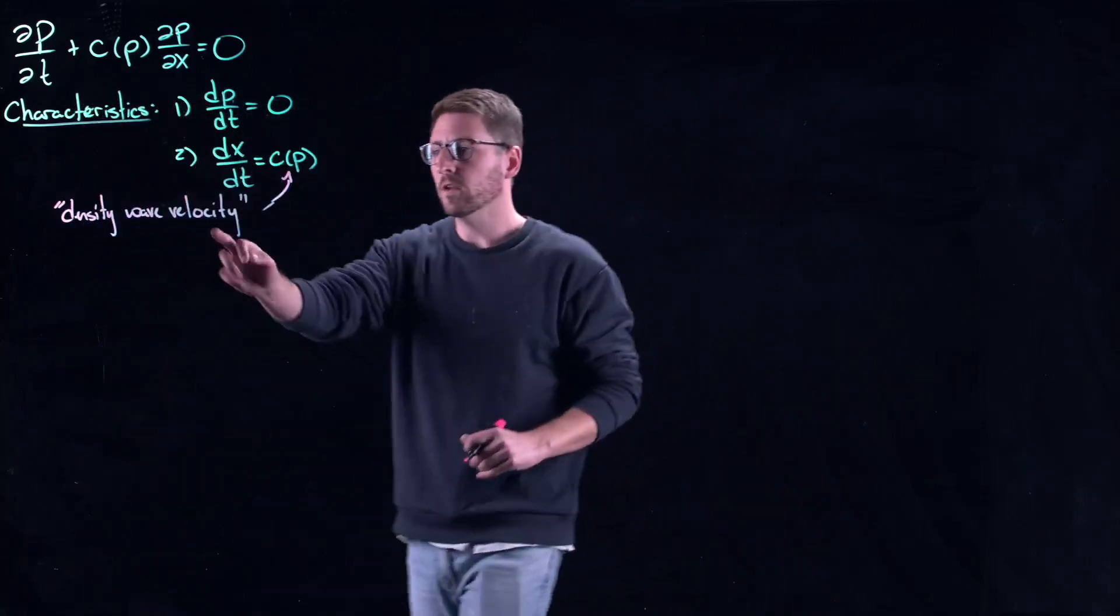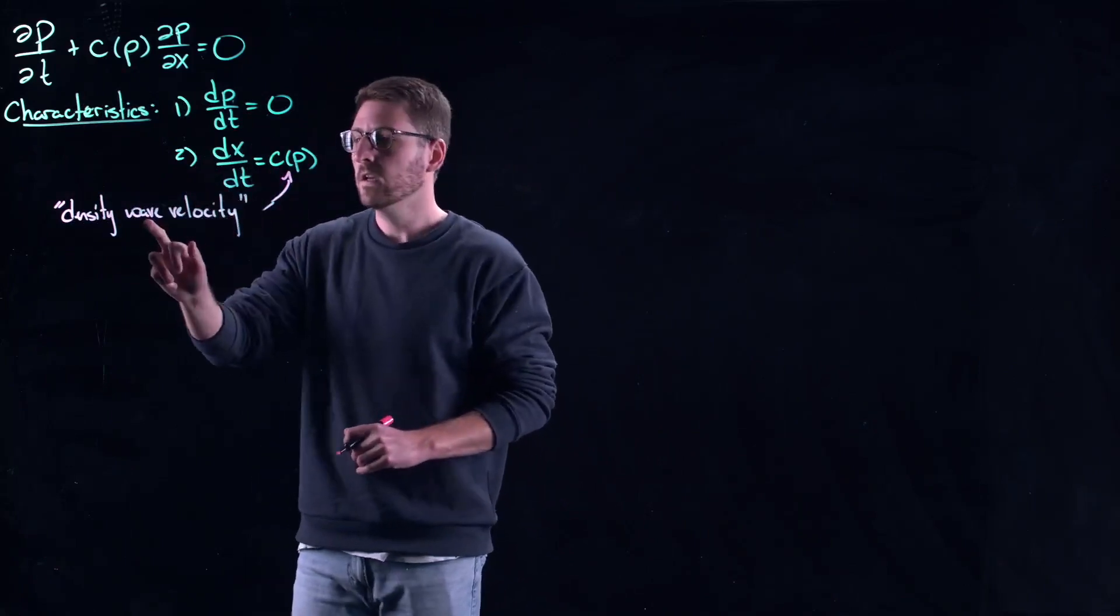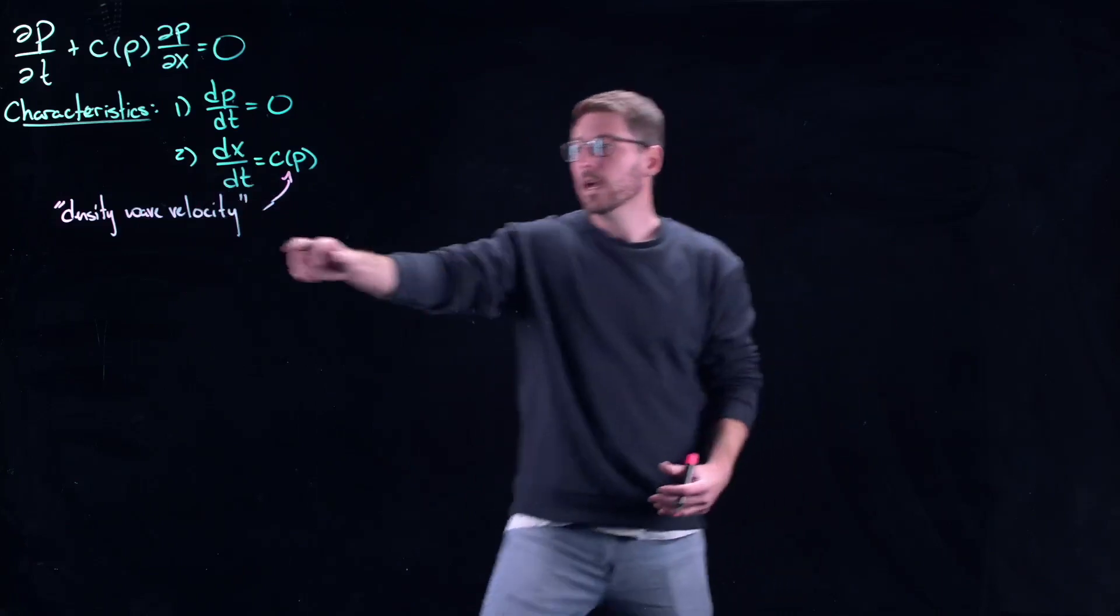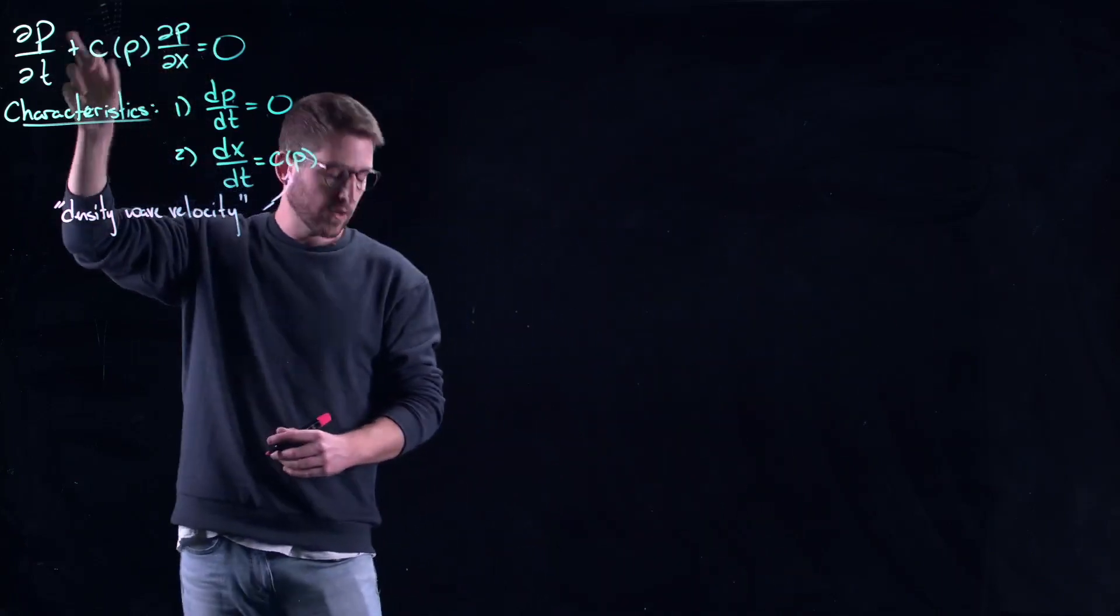Essentially the velocity part comes from the fact that this is the speed that you're moving along the characteristics. The wave is the fact that the characteristic transports you, and the density comes from the fact that it depends on the original unknown variable.